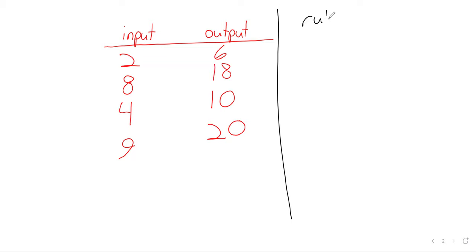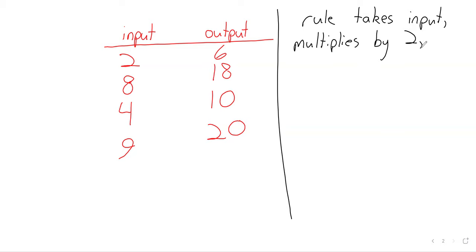The rule we have here takes the input, multiplies it by two, then adds two. Most of the functions we work with in day-to-day algebra look like this: our input is some number, our function does something to that input. But we can have functions in real life where the inputs and outputs might not all be numbers.